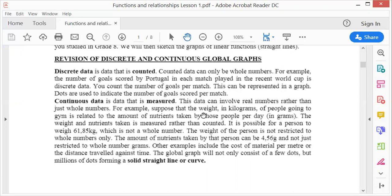For example, suppose the weight in kilograms of people going to the gym is related to the amount of nutrients taken per day in grams. Weight and nutrients are measured rather than counted. You measure using an instrument. The weight of a person is not restricted to whole numbers only. You can weigh 61.85 kilos.